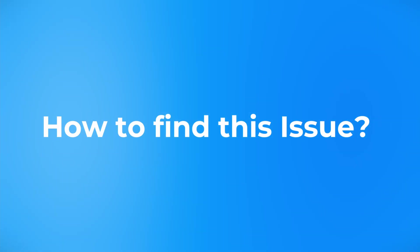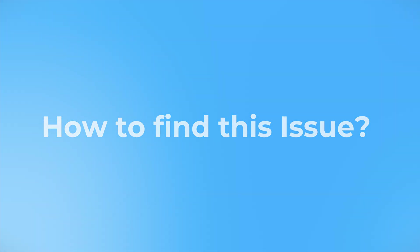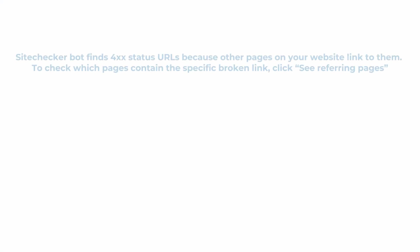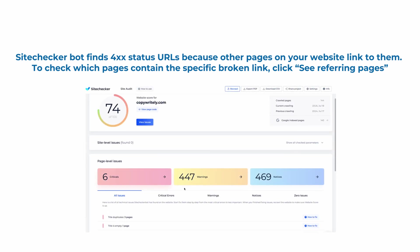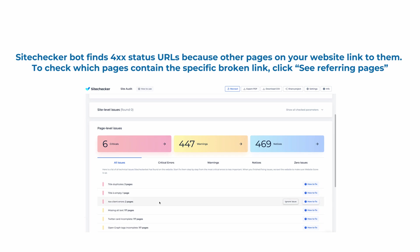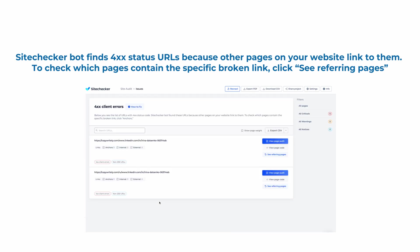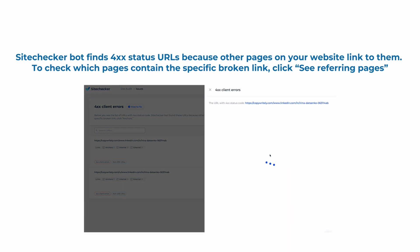So let's find out how to find this issue. SiteChecker Bot can help you to find URLs with such status because other pages on your website link to them. To check which pages contain the specific broken URL, you can click on the 'See Referring Pages' button.